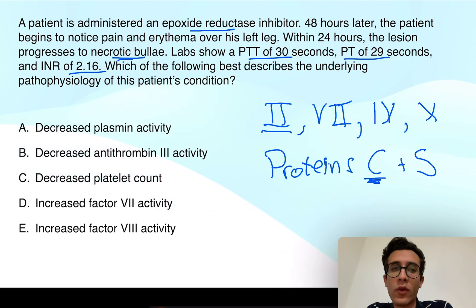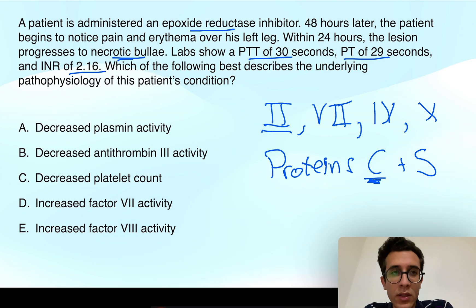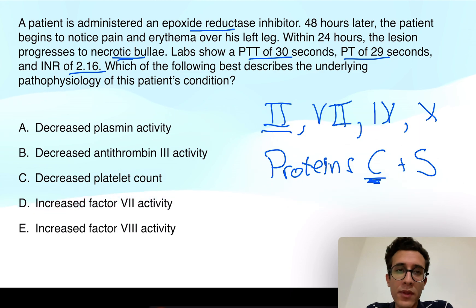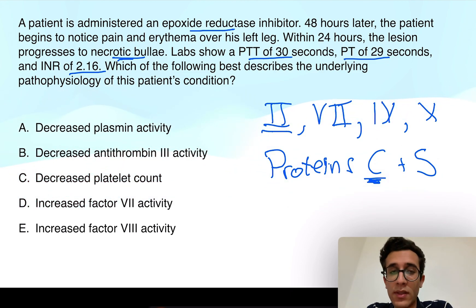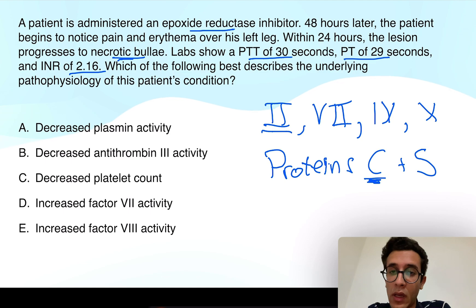The problem with this question is that it's not straightforward — depletion of protein C is not an answer choice here, so you've got to think one step ahead. Ask yourself: what is the function of protein C? Protein C inhibits factors 8 and 5. Now that protein C levels are low, factors 8 and 5 are disinhibited and will have increased activity. Factor 5 is not an option here, but factor 8 is, which makes answer choice E the correct answer.